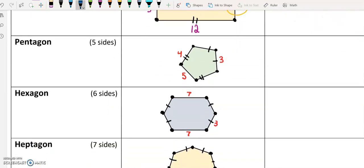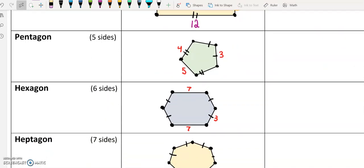Moving down to the pentagon, the five-sided shape. Again, this side right here doesn't have a tick mark. So it is a unique side. Nothing else is like it, but it does tell us that that measurement is a five.